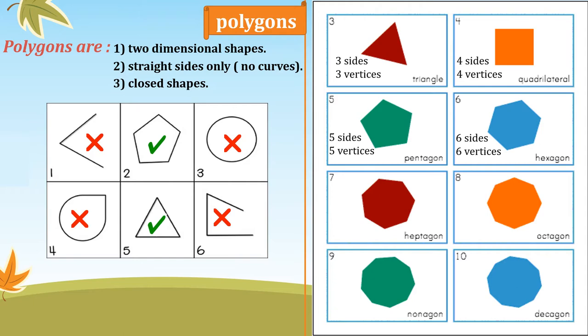Next is heptagon — seven sides and seven vertices. Then octagon — eight sides and eight vertices. Then nonagon — nine sides and nine vertices. And decagon — ten sides and ten vertices. We studied all of them last year except heptagon, octagon, nonagon, and decagon.